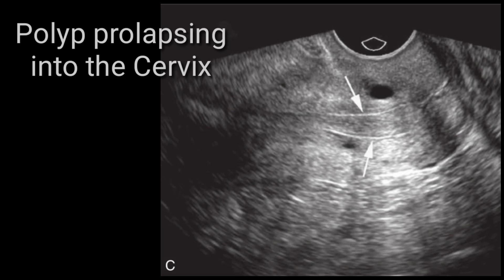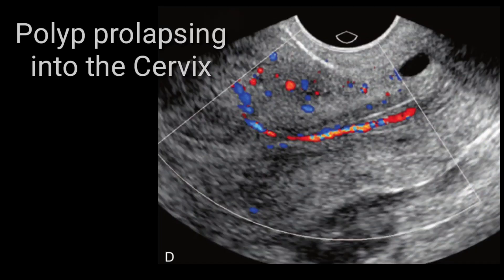A polyp may be confined within the cervical canal or may prolapse from the endometrial cavity. The endometrium is a very common area for polyp development. Polyps can be single or multiple, small or large. If large enough, they are likely to prolapse downward into the cervical canal. On Doppler imaging, this polyp shows increased vascularity — hypervascular polyps are important to note.